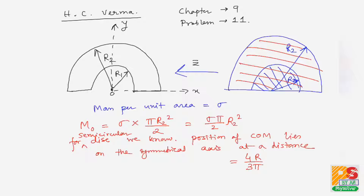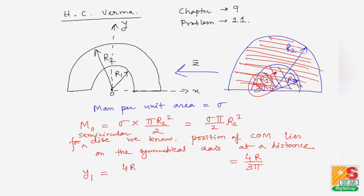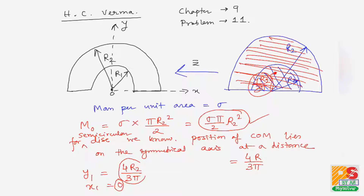Therefore the position of the center of mass of the entire red-shaded semi-circular disk of radius r2 lies at a distance of 4r2/(3π) from the center. So x0 = 0 and y0 = 4r2/(3π). This is the mass m0 of the entire semi-circular disk, and these are its center of mass coordinates.